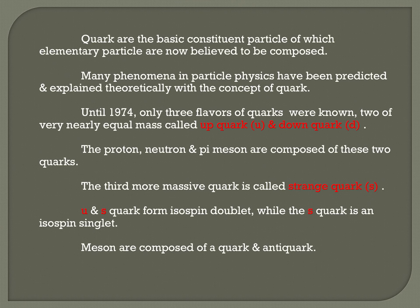An important point is that mesons are composed of a quark and anti-quark pair. Anti-particles are formed by the anti-quarks of those forming the particles. Just as we saw with leptons and anti-leptons, here we have quarks and anti-quarks.